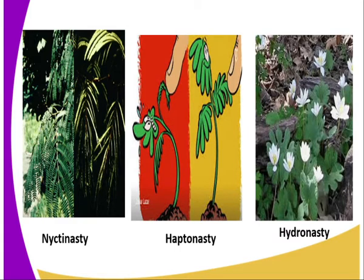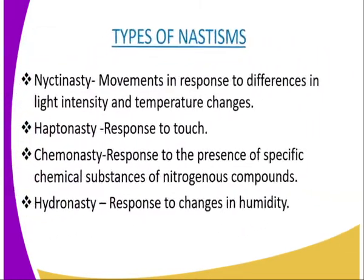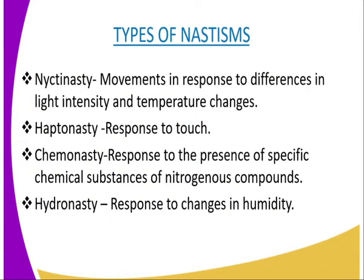Experiments with Mimosa suggest that a chemical agent is involved in these reactions. Haptonasty is also shown in a plant like the Venus flytrap, which is an insectivorous plant that grows in soil deficient in nitrogen, so it gets its nitrogen by trapping and digesting insects. When the sensitive hairs on the leaves are touched by landing insects, the midrib cells lose water rapidly, causing the trap to spring shut, closing the leaves with the spines interlocking. We have another type of nastics which we call chemonasty.